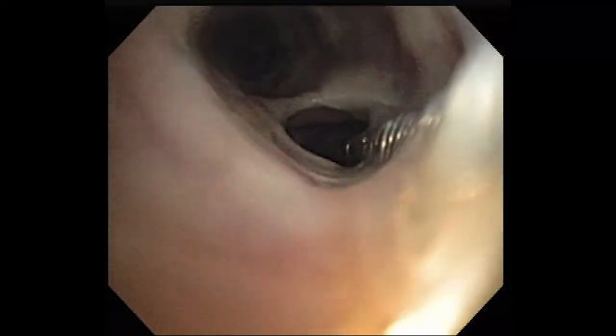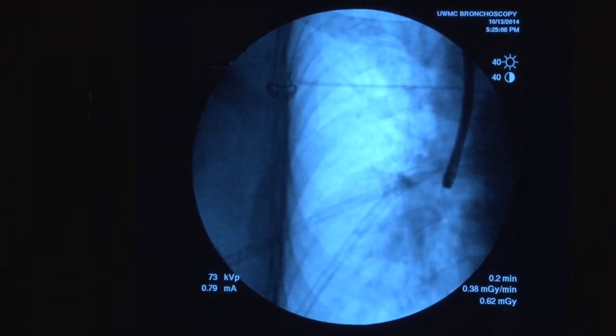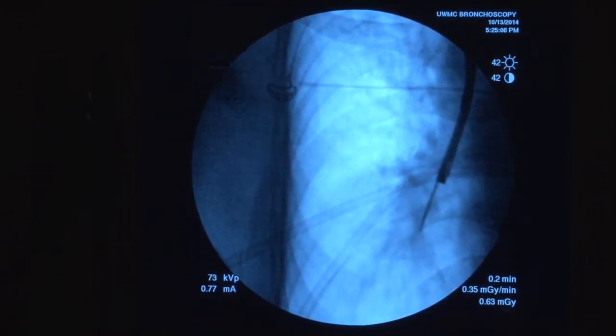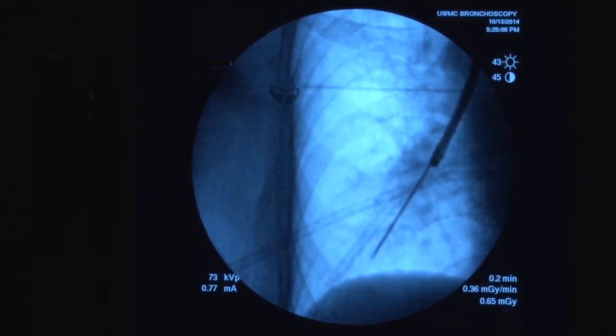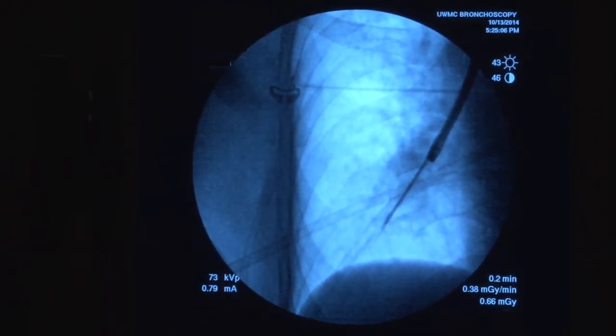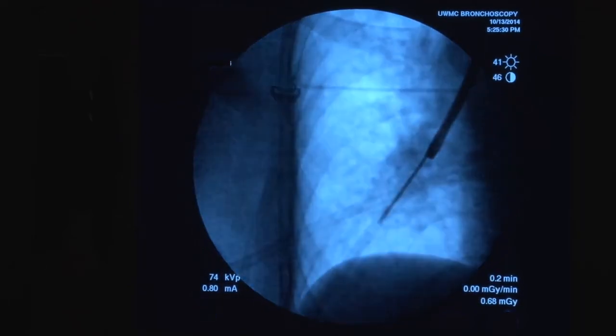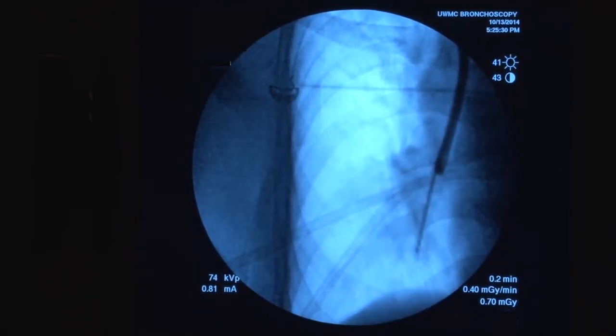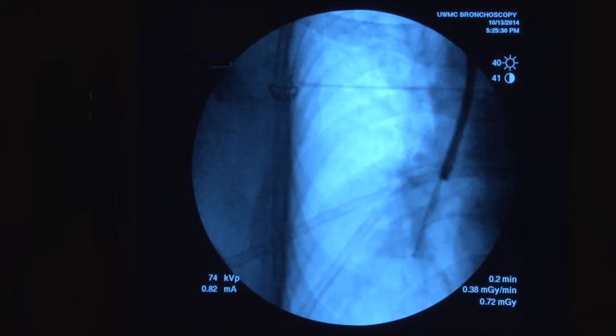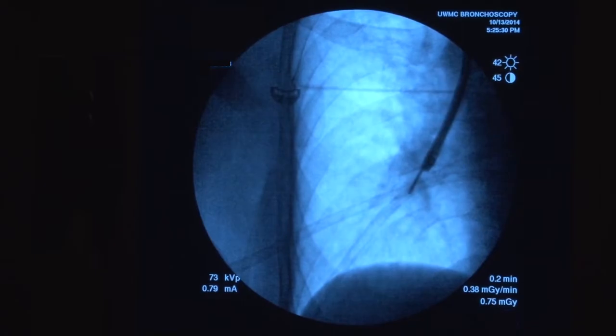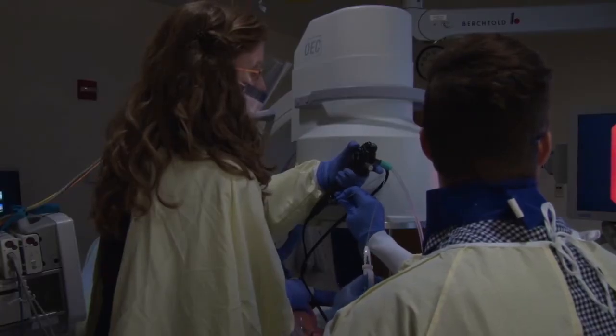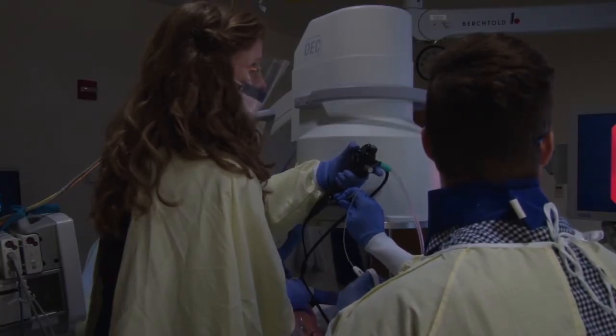Then turn on fluoro when you can no longer directly see the tip of the forceps. On the fluoroscope monitor, watch the forceps advance until you feel resistance or until the tip of the forceps are within a couple centimeters of the chest wall or appear to be within the mass. Then retract the forceps a centimeter or two. Open the forceps and advance until you meet resistance again. Then close the forceps. Once the forceps are closed, turn off fluoro, hold the forceps closed for a second, and then retract.